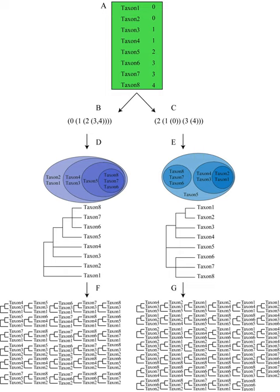3-taxon analysis, or 3TS, 3-item analysis, 3-EA, is a cladistic-based method of phylogenetic reconstruction.